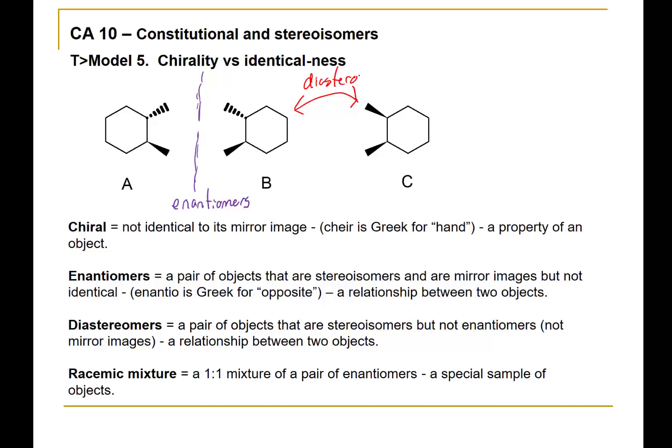So B and C are examples of diastereomers. It's possible for one molecule to have more than one diastereomer — enantiomers are always pairs, but molecule C can have another diastereomer. And as you might imagine, the relationship between A and C is that they are also diastereomers.